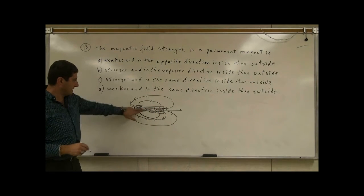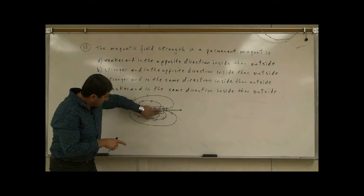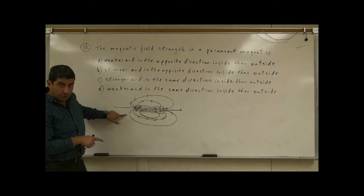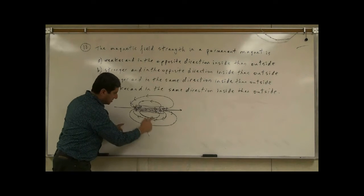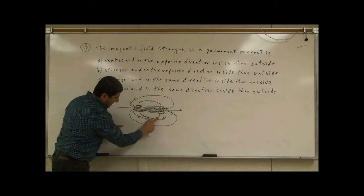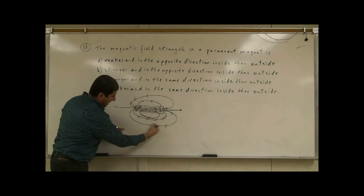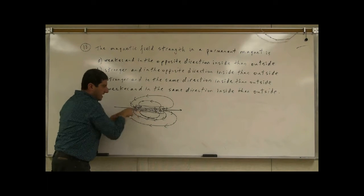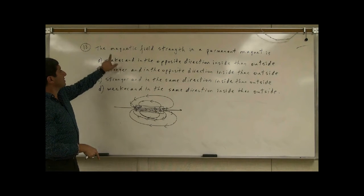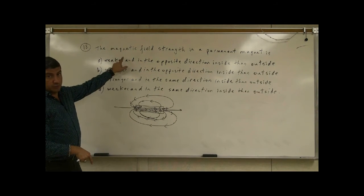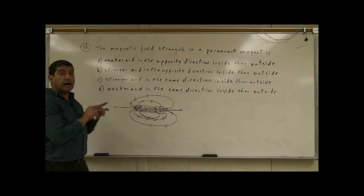Notice how the fields inside are all headed in the opposite direction as the fields outside. They're all opposite because the field lines have to make a complete circle — they have to go to the left outside, and then inside they have to go to the right. So the magnetic field inside the magnet has to be in the opposite direction.